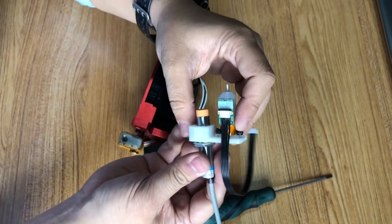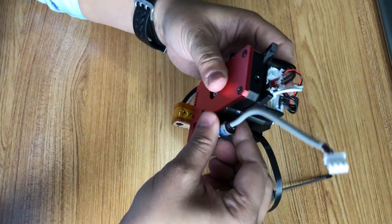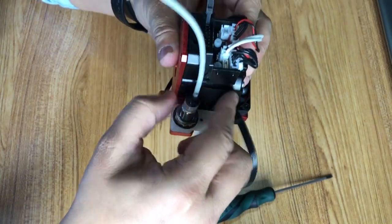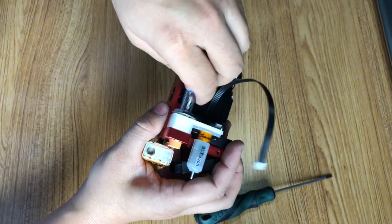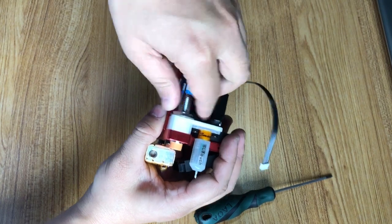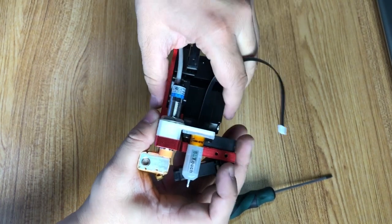Like this. Then we mount it onto the extruder. It doesn't have to be very tight. Now the BLTouch is here.